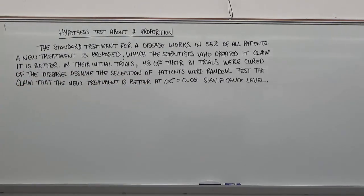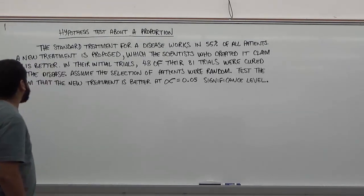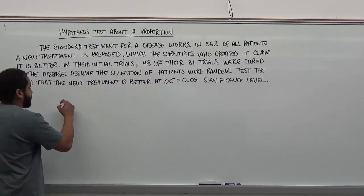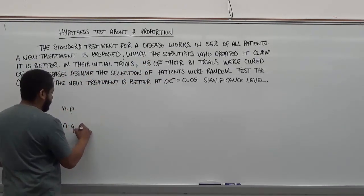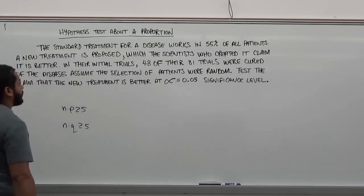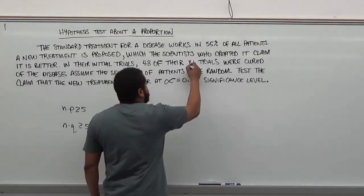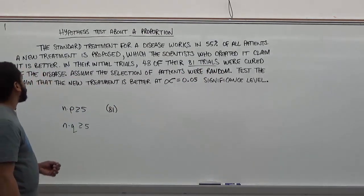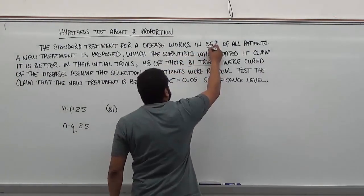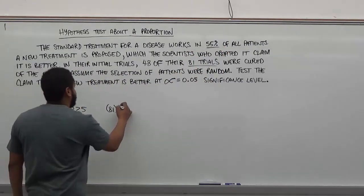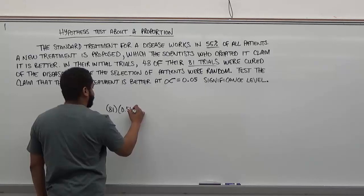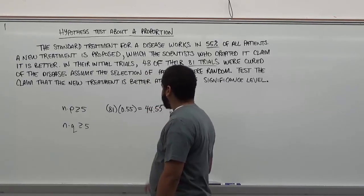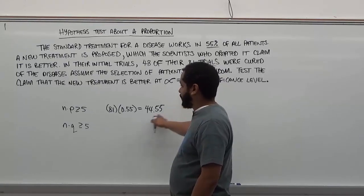Before we begin, we want to analyze whether we can run a proportion hypothesis test. To test that, we check n times p and n times q to make sure these are greater than or equal to 5. Our n is 81 trials, and p is 0.55, the probability of being cured under the standard treatment. So 81 times 0.55 equals 44.55, which is greater than or equal to 5.